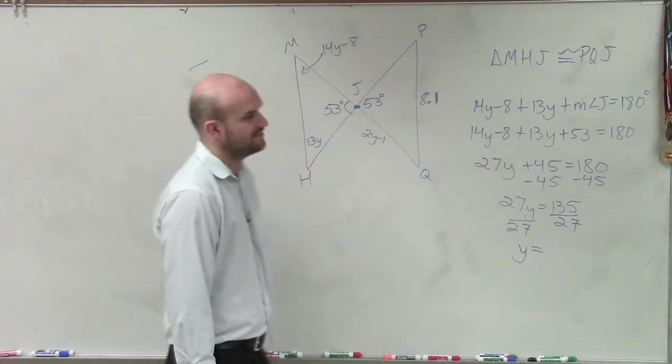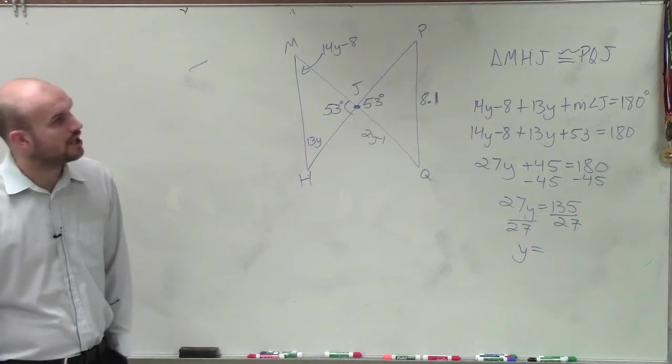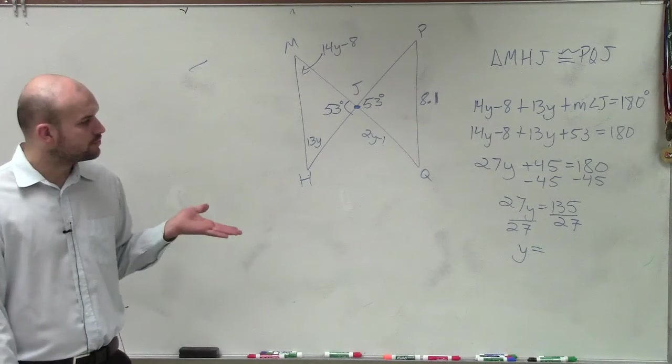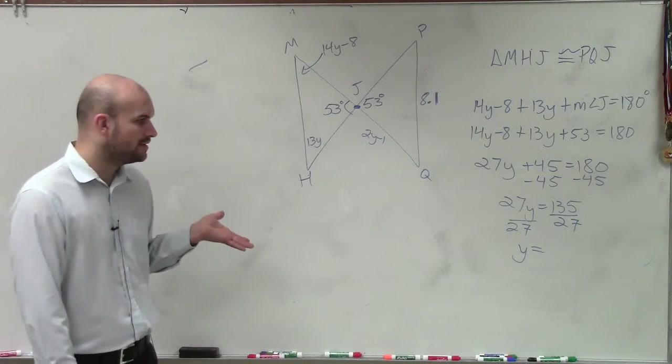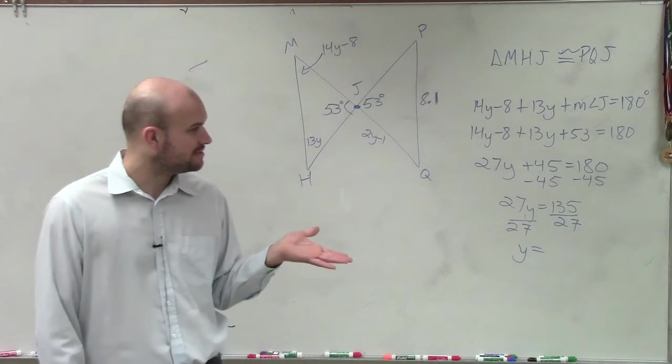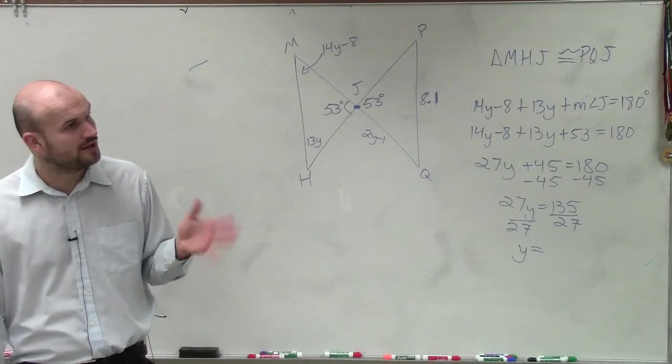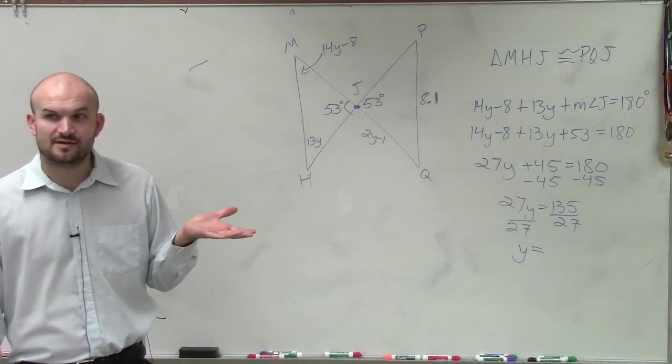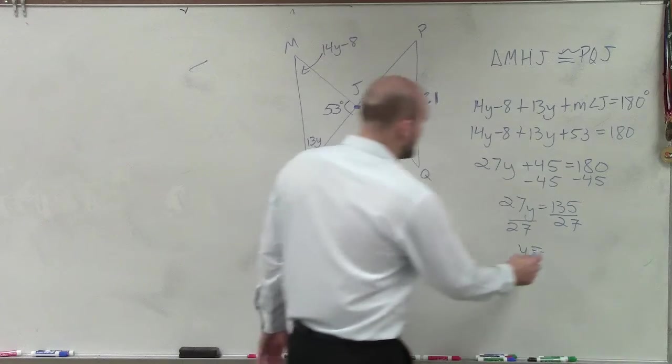And then I got to do 135 divided by 27. So 27 times 2 is 54, times 4 is 108. And then if I do it 5 times, that's going to give me 135. So y equals 5.